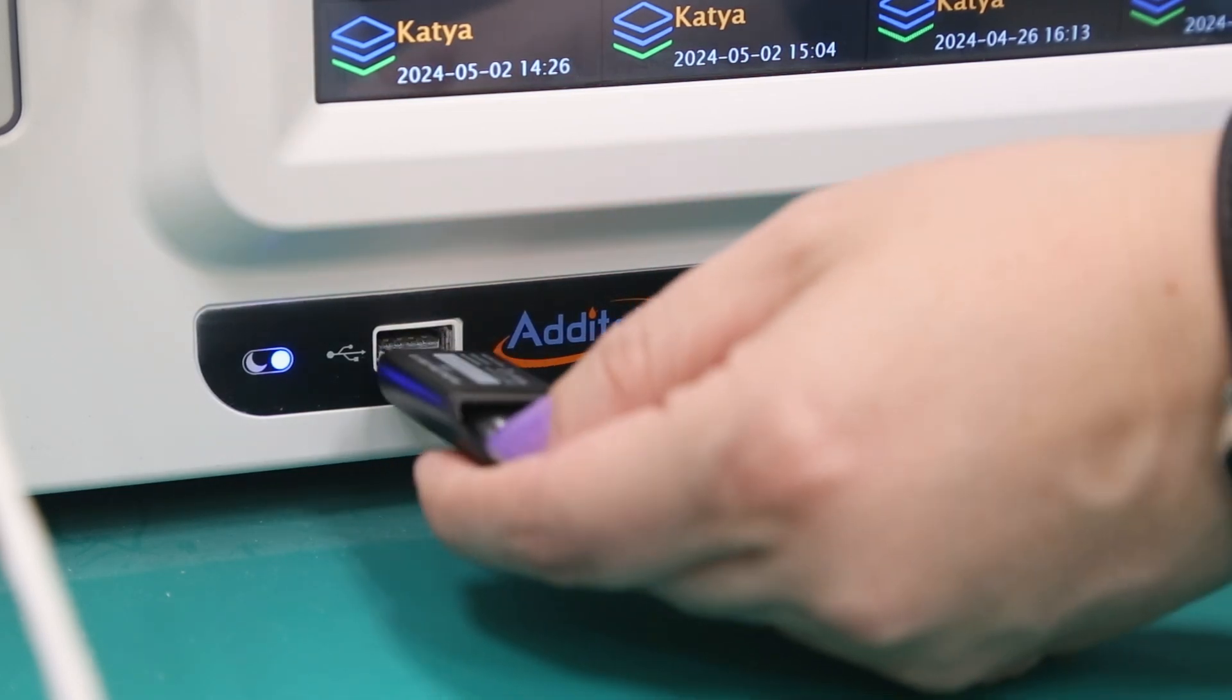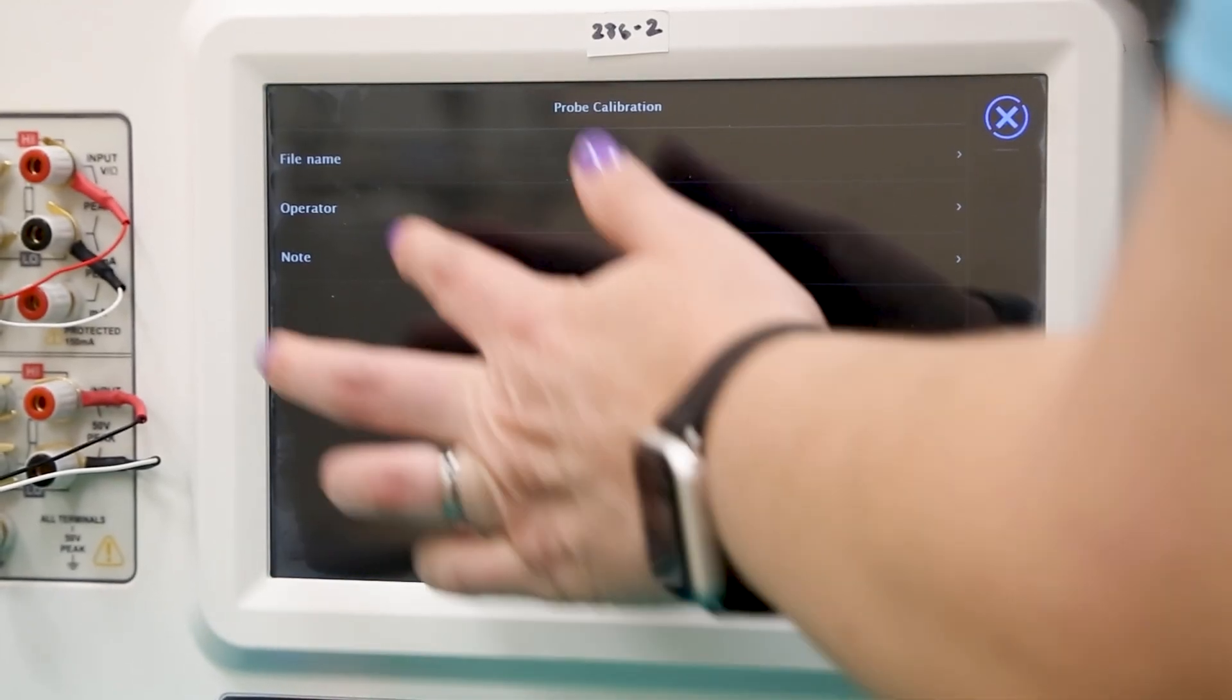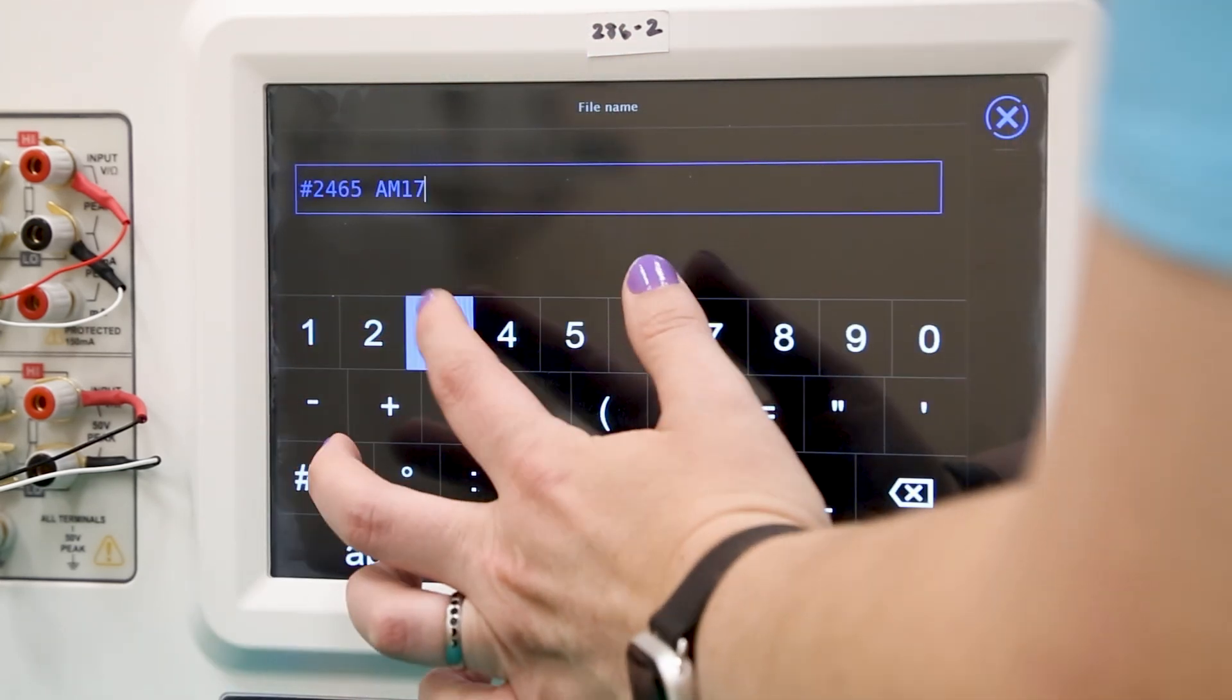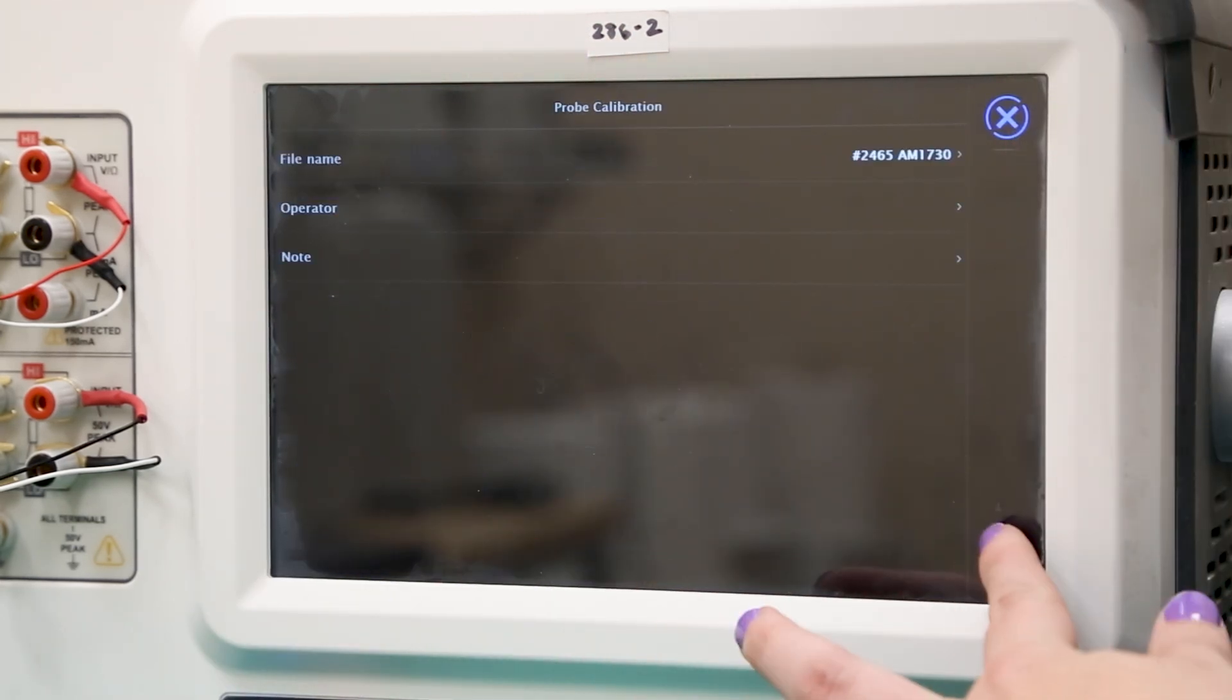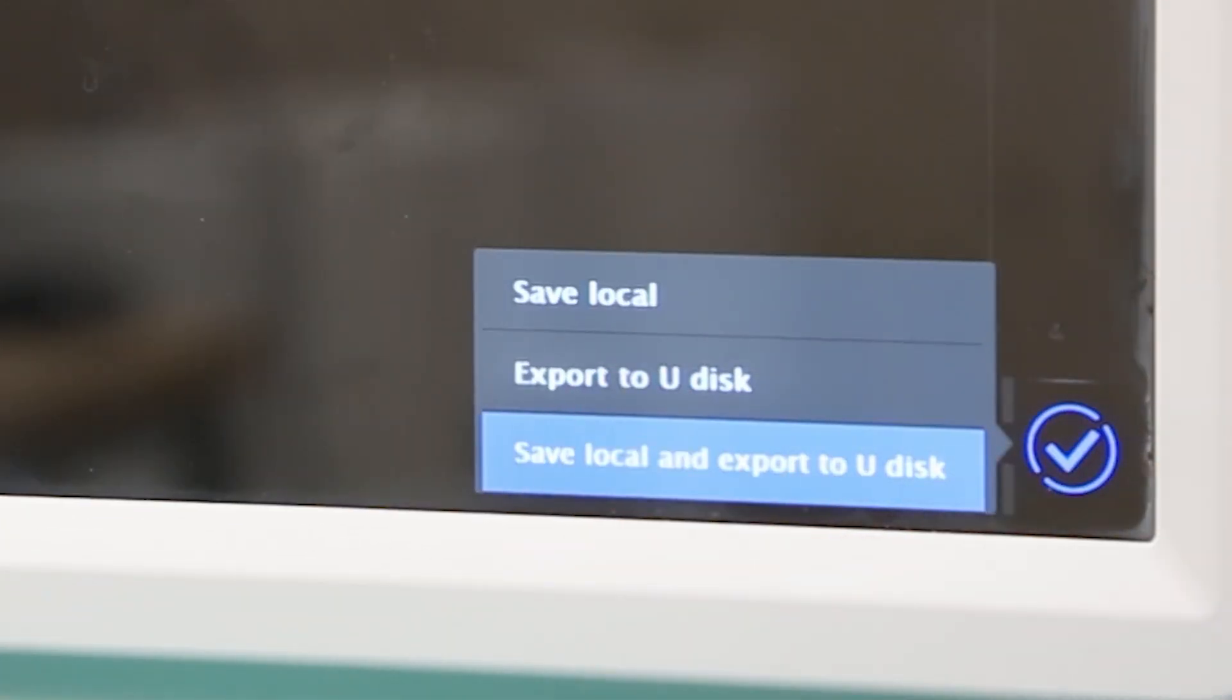These results can then be saved and exported by first inserting a USB drive, then pressing the save button. Here the user can enter the file name, the operator name, and any extra notes about the procedure, before exporting by selecting the save local and export to Udisk option in the bottom right corner.